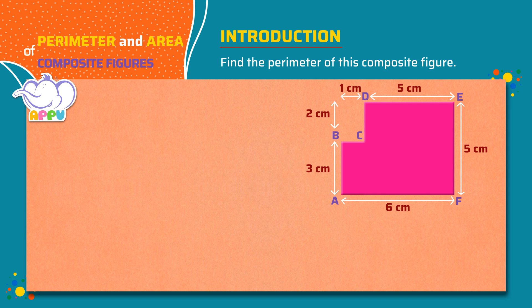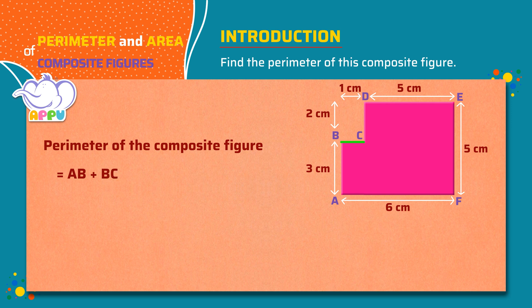Let's find the perimeter of this composite figure. To find the perimeter, we need to find the total length of all the sides of the shape. The perimeter of the composite figure equals AB plus BC plus CD plus DE.